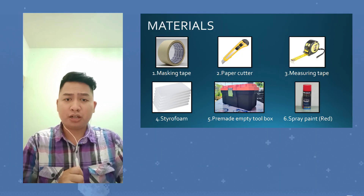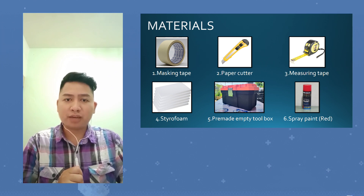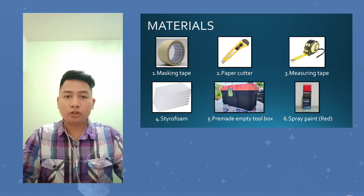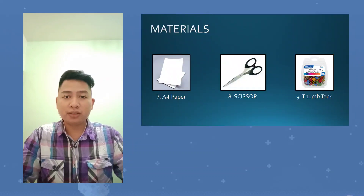Next, the materials for making PWQT kits. All you need are masking tape, paper cutter, measuring tape, styrofoam, a pre-made empty toolbox, and a spray pen. For the WQI wheels, all you need are F4 paper, a thumbtack, and a scissor.